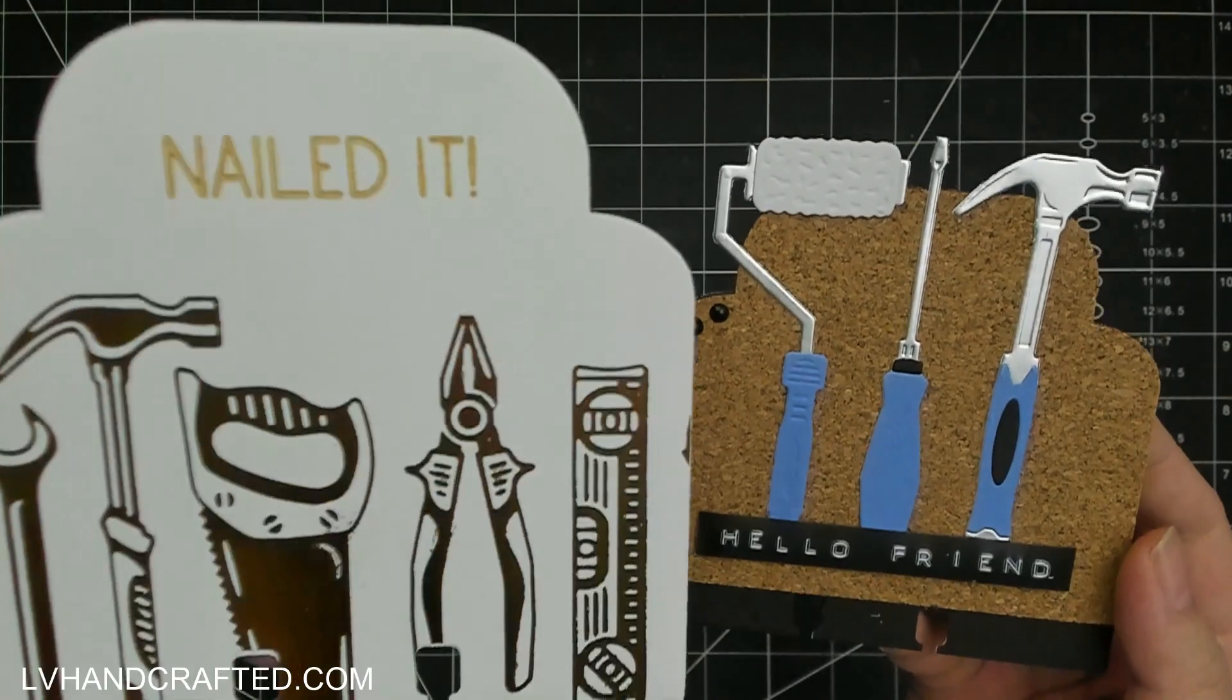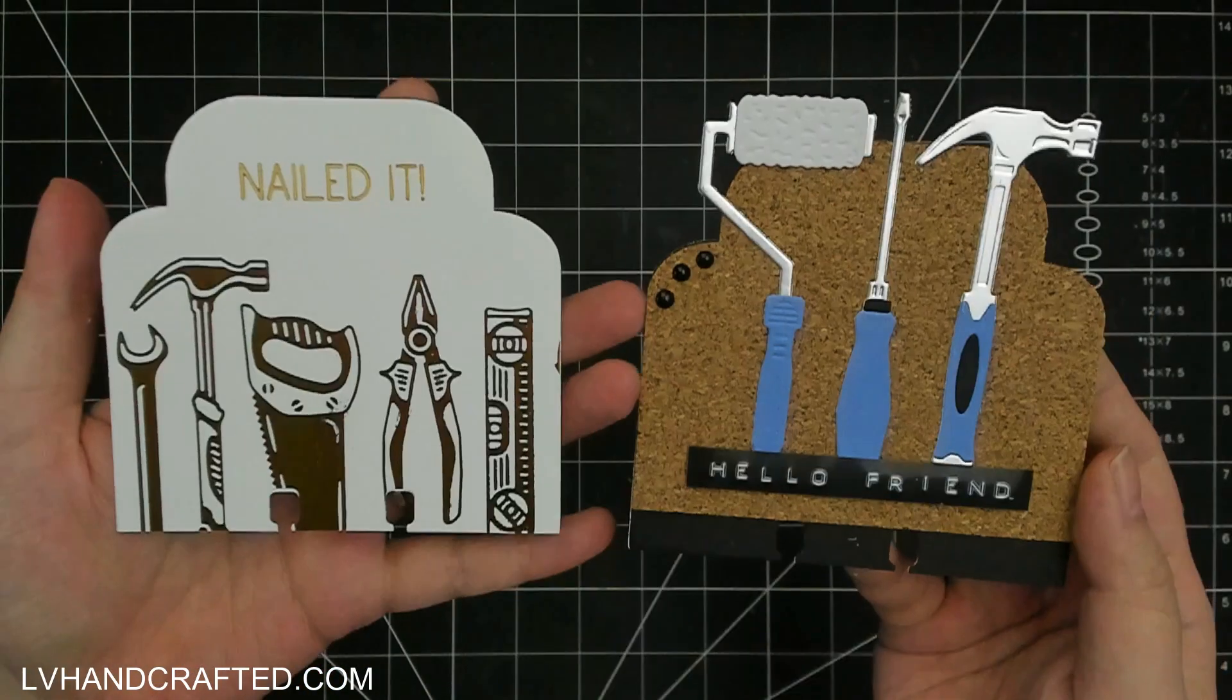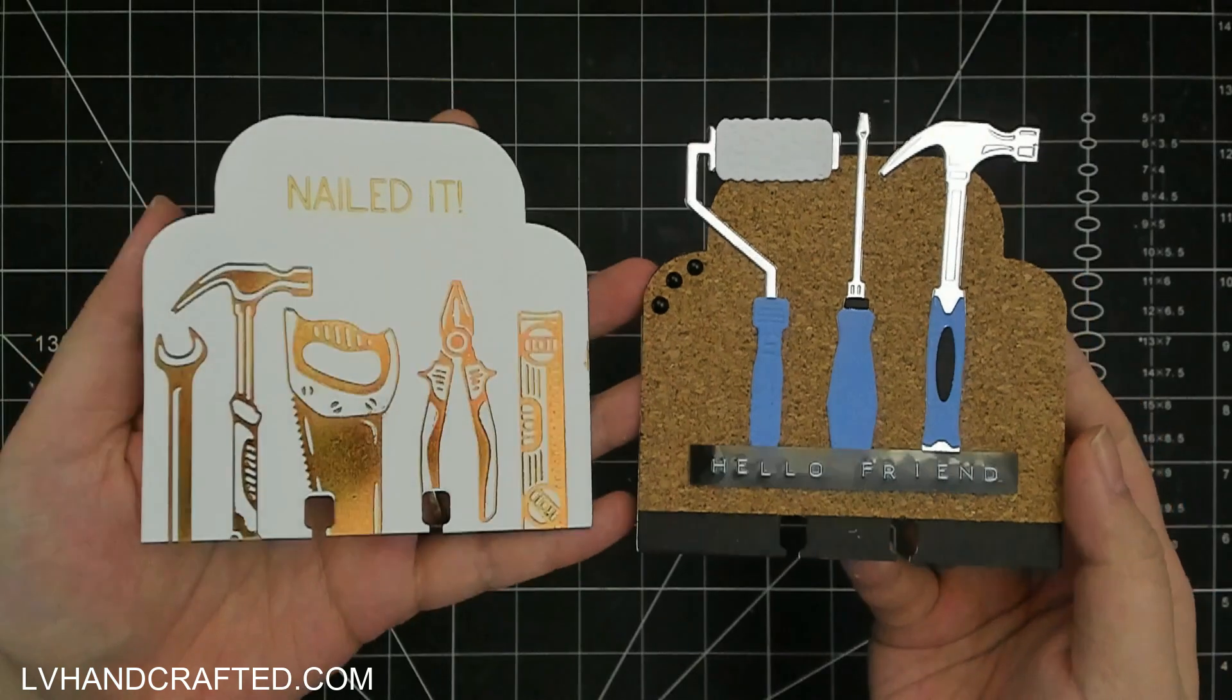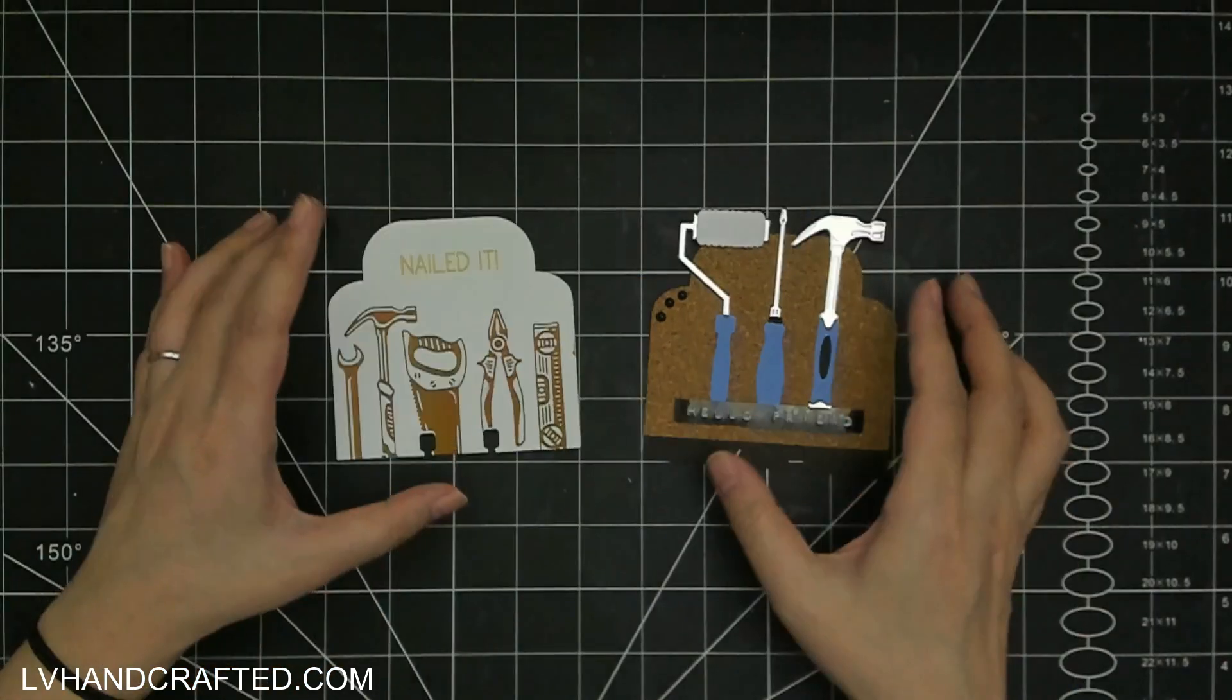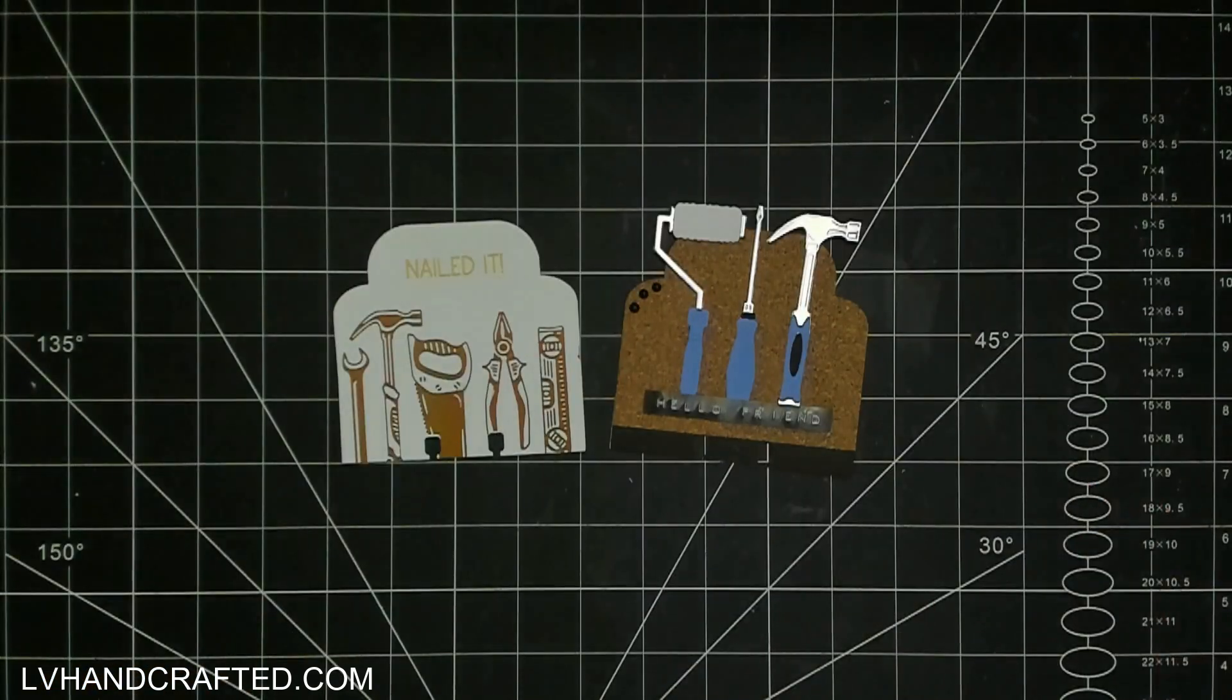So here's the second memory deck card that I made, and that is using the glimmer plate that is part of this collection. And the nail is actually from the stamp set that is also part of this collection. I'll leave links to everything in the description blocks below if you want to check it out.